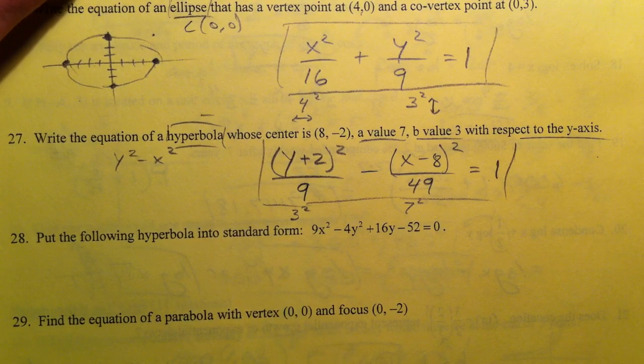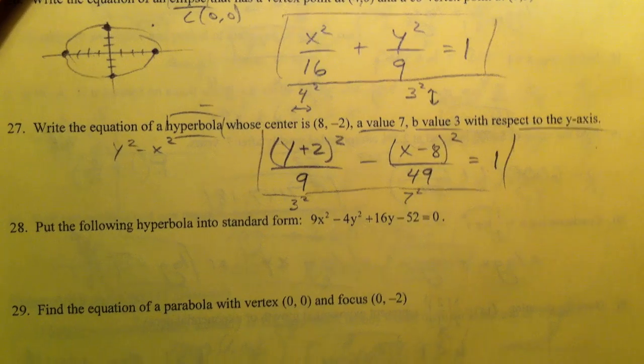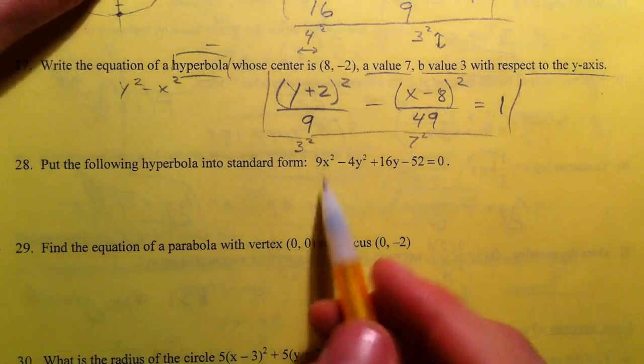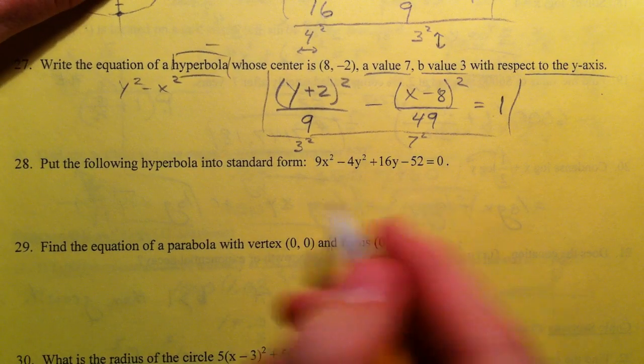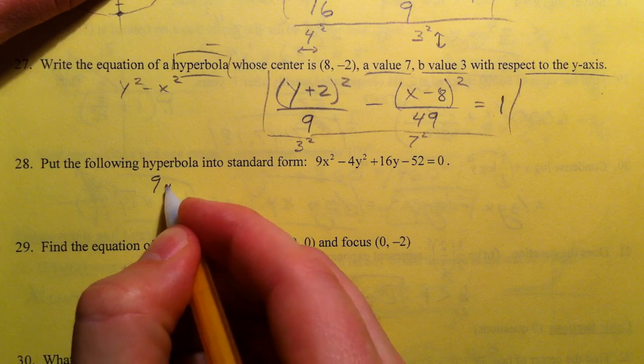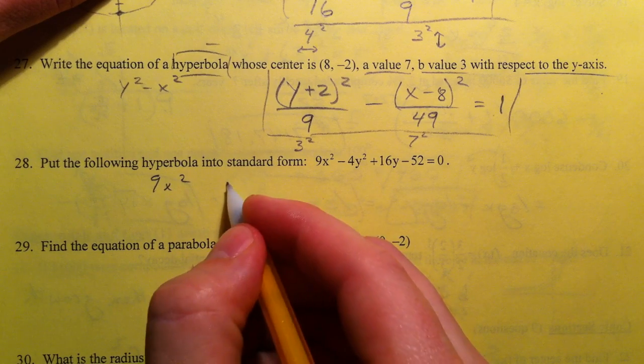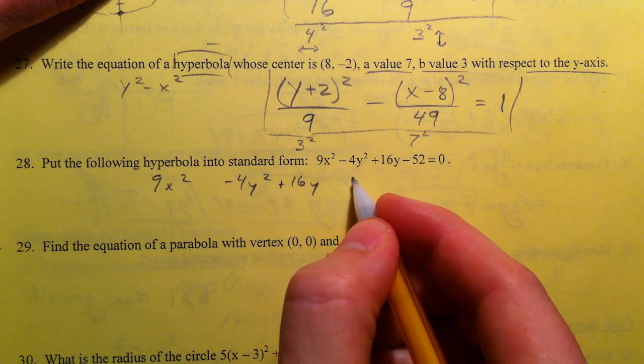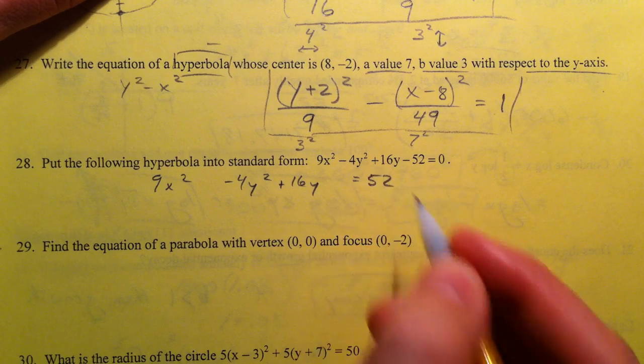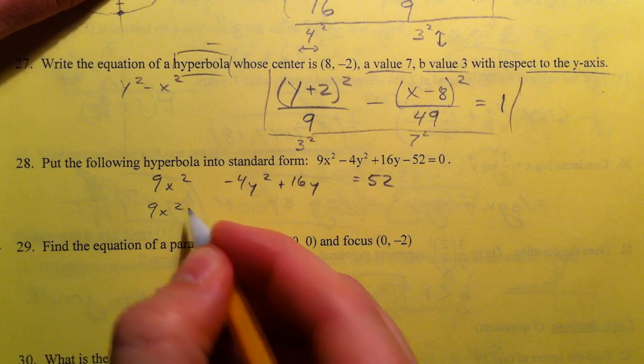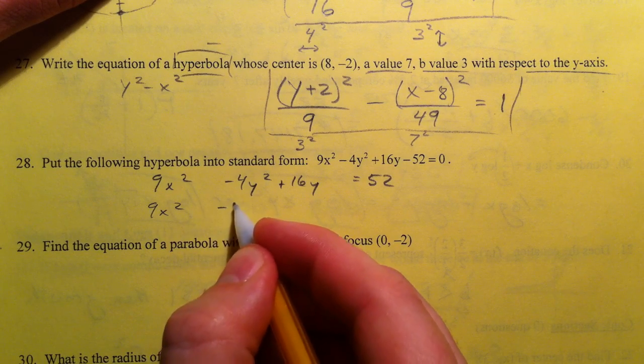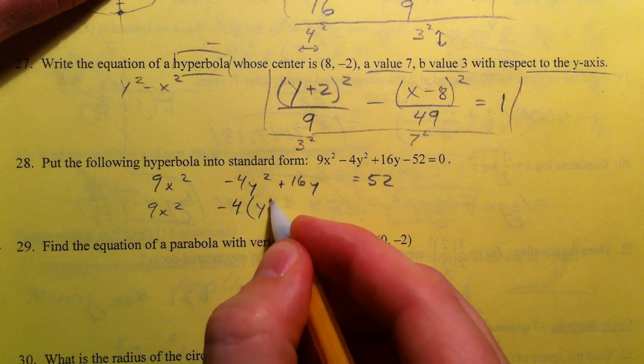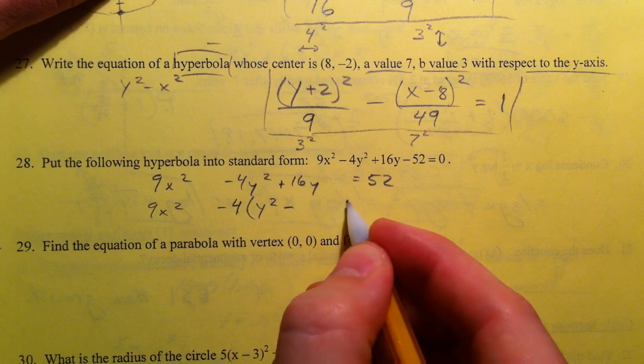Put the following hyperbola into standard form so let's try this one. This is one where we had to complete the square a bunch and so we grouped our x's and our y's. Group 9x squared minus 4y squared plus 16y and then we ditch our constant to the other side. Then what we did was we would factor out if we needed to and we only factor out the numbers we could technically factor out a y but our goal is to complete.